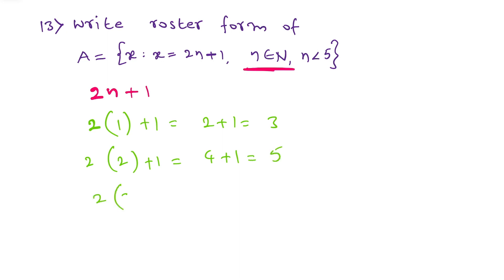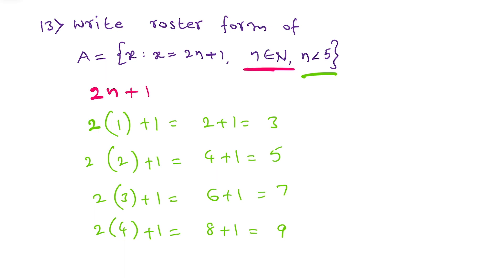Then 2 times 3 plus 1 = 6 plus 1 = 7. Then 2 times 4 plus 1 = 8 plus 1 = 9. How many do we need to substitute? It depends on the condition n less than 5, so we stop at 4. So set A = {3, 5, 7, 9}. This is the required set.